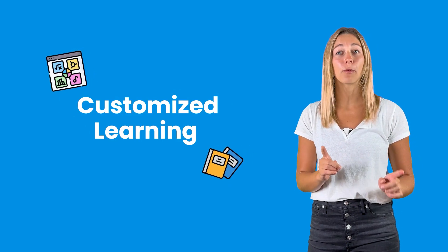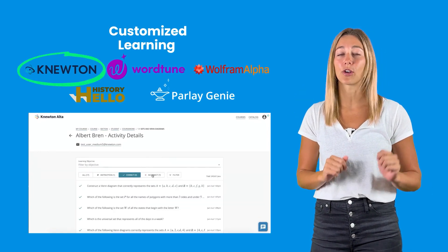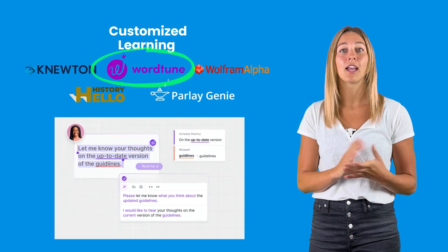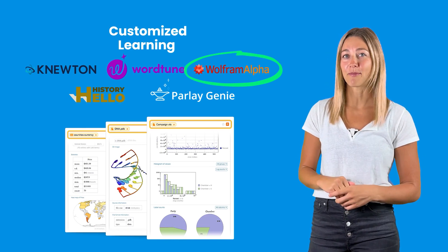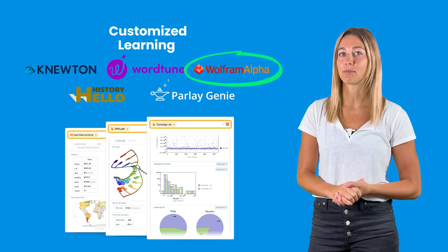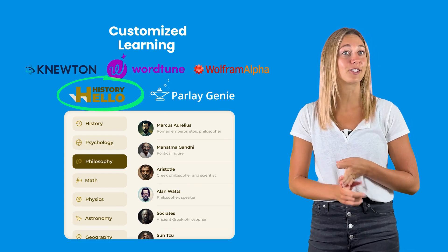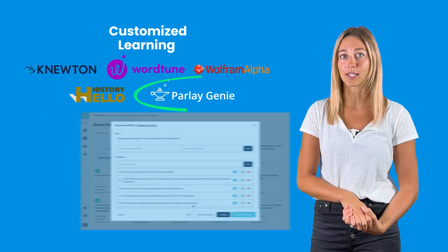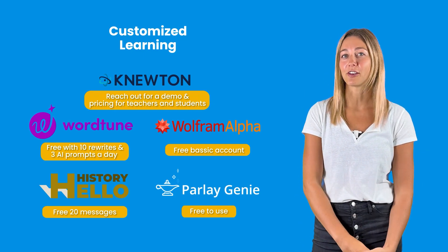There are many AI tools that are all-encompassing, but these next tools are subject-specific to really help you tune in to certain educational areas. Newton is a tool for creating customized and differentiated learning paths for STEM subjects, while WordTune helps you paraphrase and rewrite your writing. Wolfram Alpha helps you answer questions for a variety of subjects, but is really an expert in math to provide step-by-step solutions. Hello History allows students to chat with historical figures like philosophers, scientists, and astronomers. And lastly, Parlay Genie helps you create higher-order discussions in your classroom. With the exception of Newton, all of these tools do have a free trial.